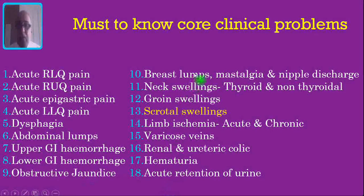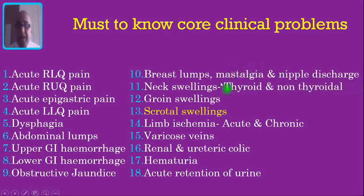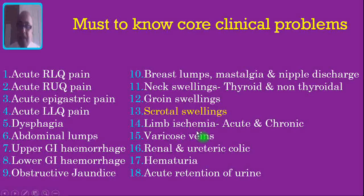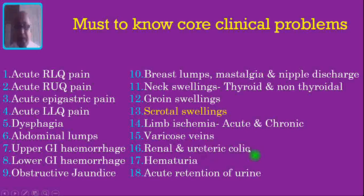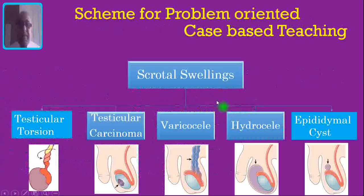I have also identified 9 other non-GI problems, namely breast lumps, mastalgia and nipple discharge, neck swellings — both thyroid and non-thyroidal swellings — groin swellings, scrotal swellings, limb ischemia both acute and chronic, varicose veins, renal and ureteric colic, hematuria and acute retention of urine.